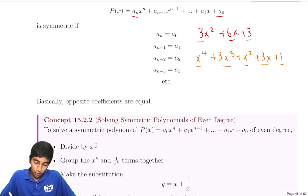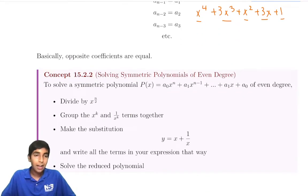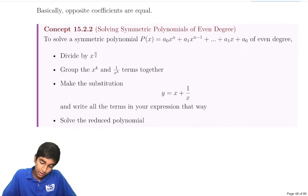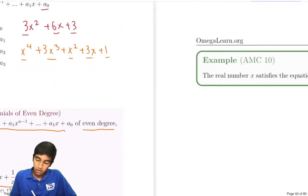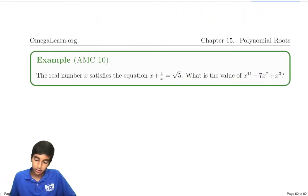So now that we know what symmetric polynomials are, is there anything else we can do besides the standard methods to solve them? Well, this is a very clever trick: if we have one of even degree n, we can just divide by n/2 and then use this over here. Let's see an example of how this actually works.